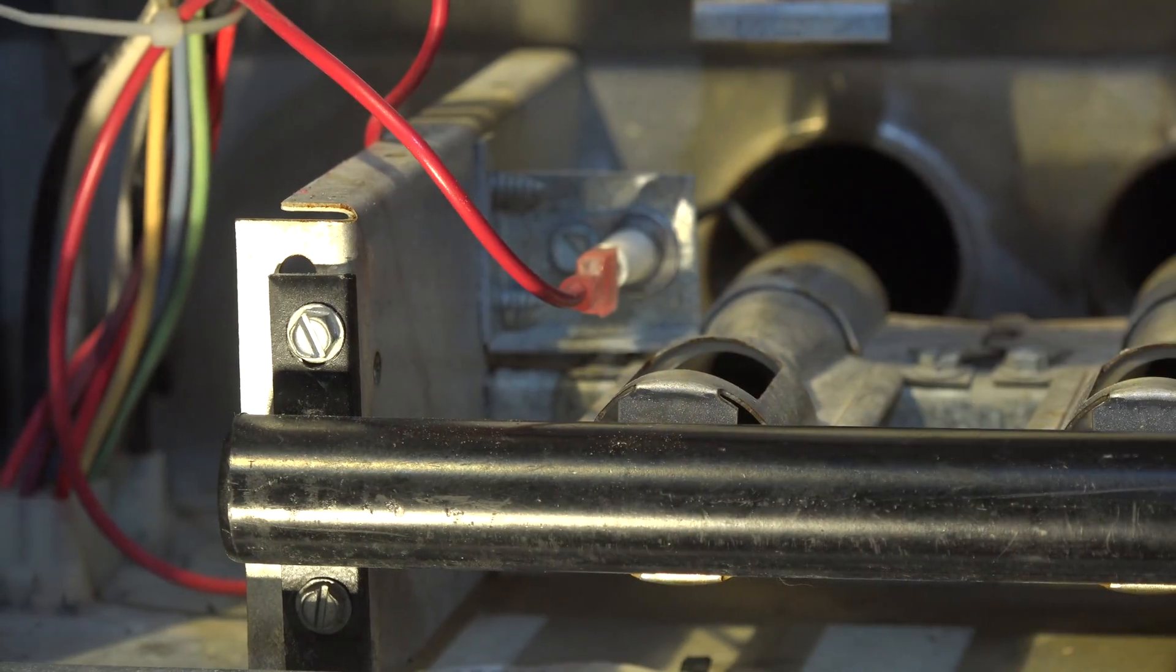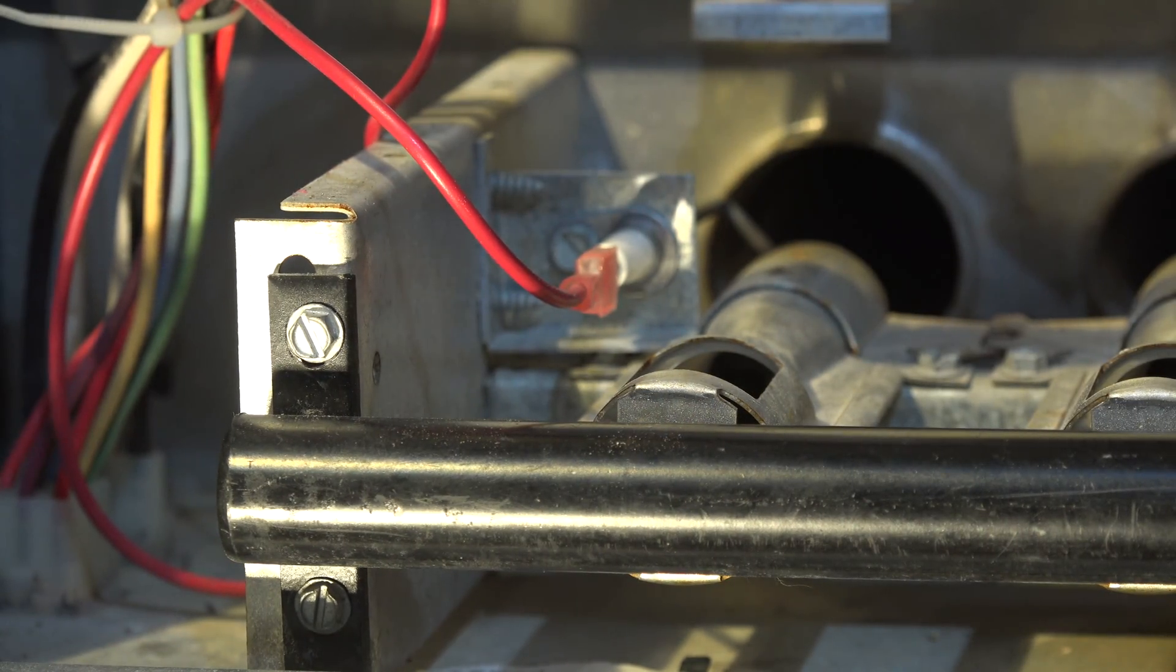Where does this wire go? It doesn't go to the integrated furnace control because there's no place for the flame rod to go there. Let's look at where it actually goes and then we'll see if we can decide why it works. I'm not sure I know why it works either, but we'll see what we can figure out.